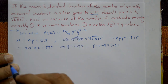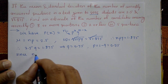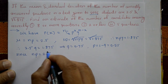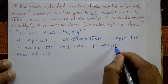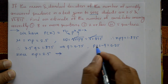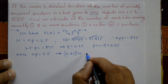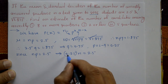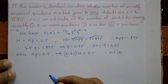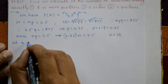Next, find n. Since np = 2.5 and p = 0.25, we have 0.25 × n = 2.5, therefore n = 10.